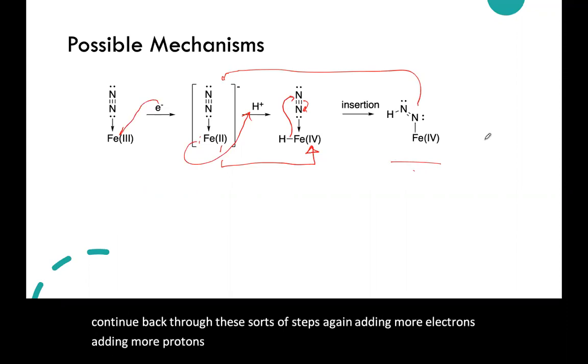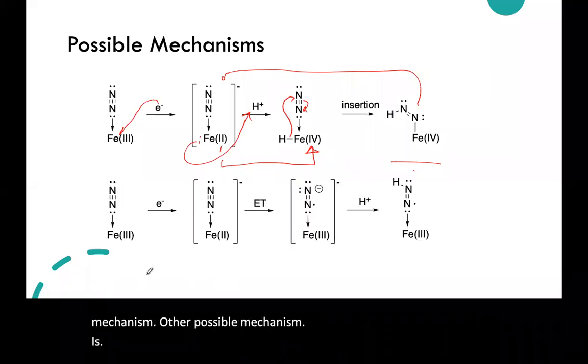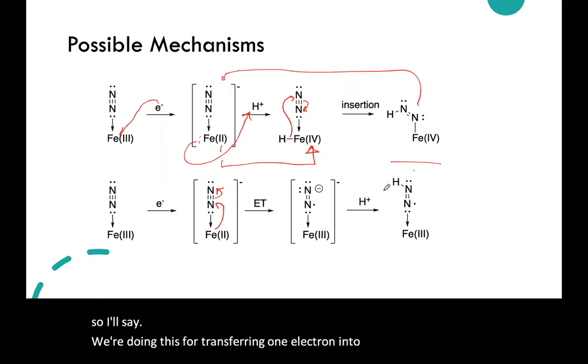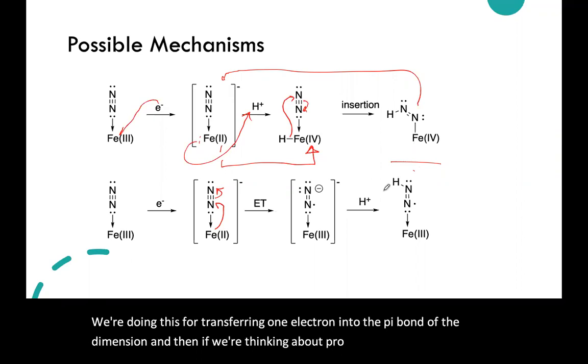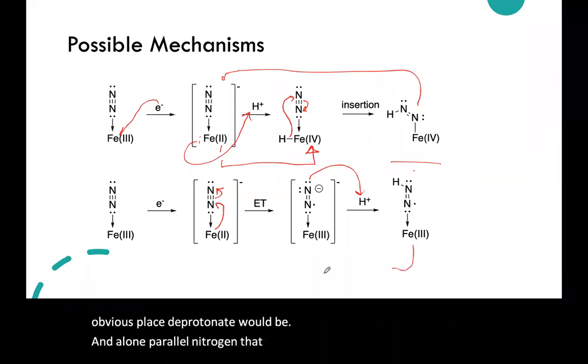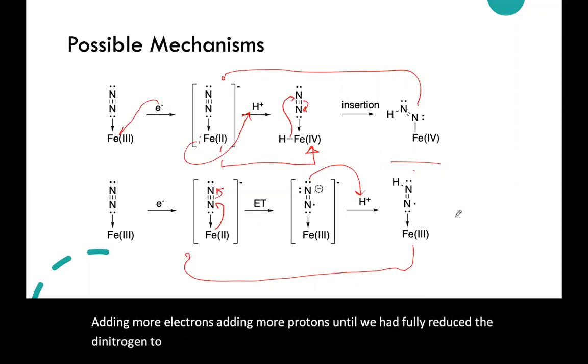So that's a possible mechanism. The other possible mechanism is that, again, we add electrons to the iron to reduce it, but then the iron might immediately go ahead and transfer an electron into this system. So we're transferring one electron into the pi bond of the dinitrogen, and then if we're thinking about protonating anywhere, the obvious place to protonate would be a lone pair on nitrogen. But again, we would keep cycling back in, adding more electrons, adding more protons, until we had fully reduced the dinitrogen to ammonia. So there are a couple of possible mechanisms. The second one is probably more widely thought about than the first one, but there have been some proposals about the other one.